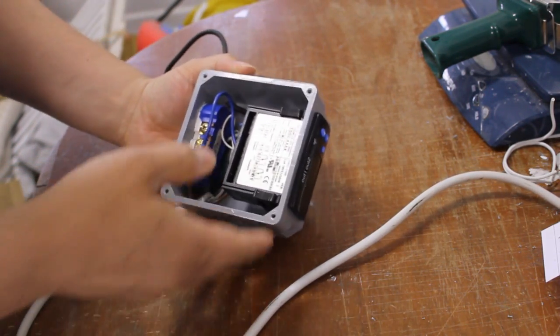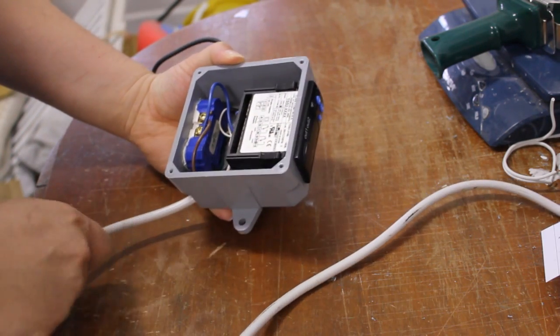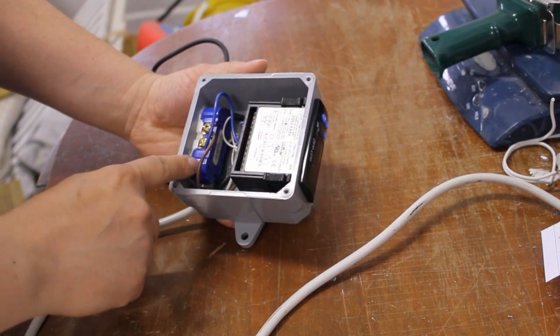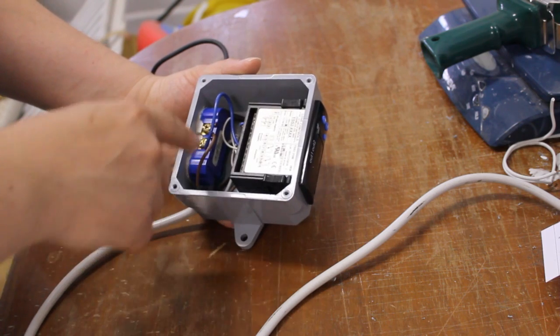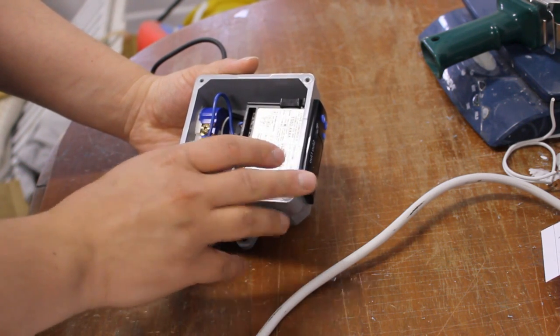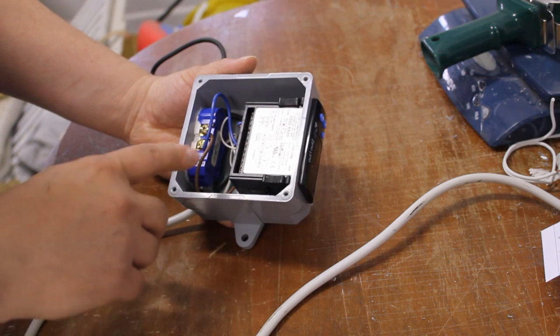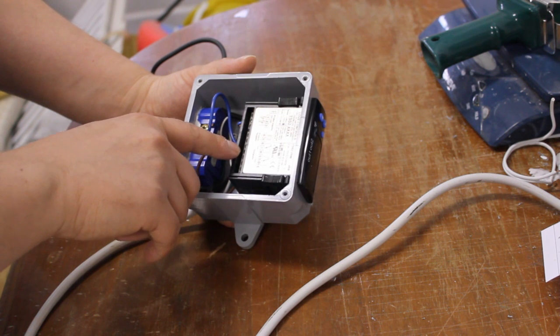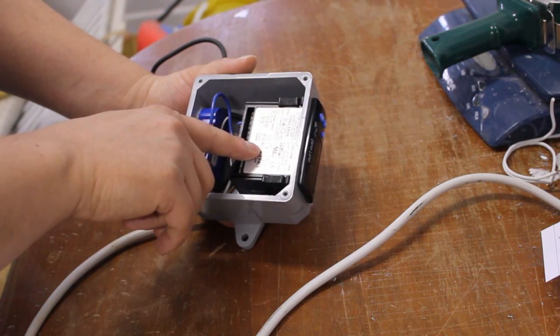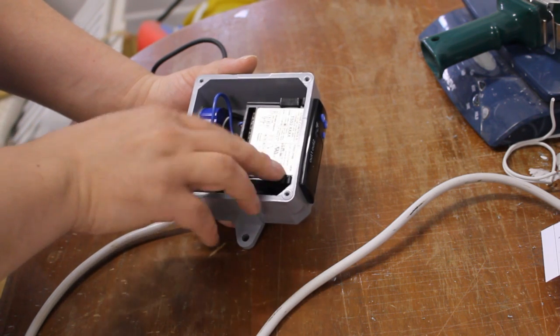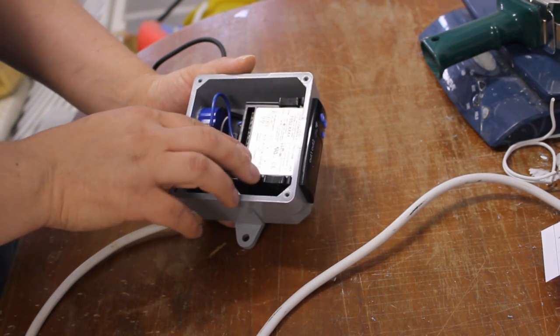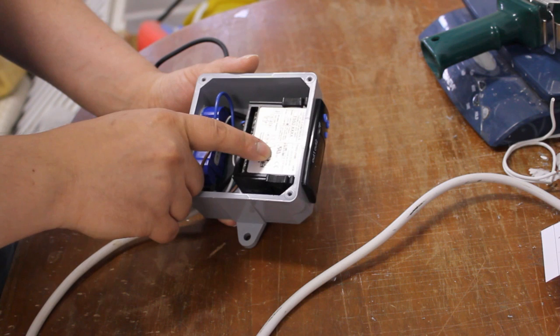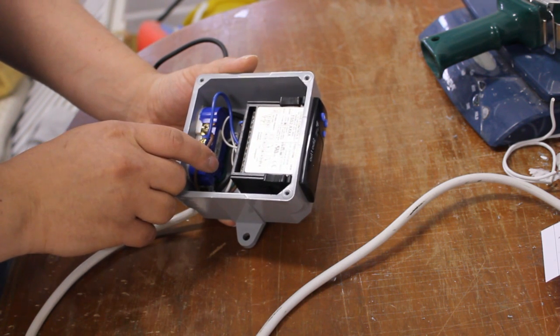So the way this is wired is really simply actually. The power cable obviously has hot, neutral and ground. The ground goes directly to the ground screw on the receptacle because there's no other place to ground on this. If this was a metal box obviously you'd want to ground to the box as well. The black goes directly to the common for both of the relays that are built in. Because this is a dual stage controller it has two double throw relays meaning it's got a normally closed shown here and a normally open and that's repeated for both of the relays.